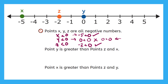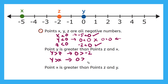Let's try the next statement. It says point y is greater than point z and x. Is this true? This would mean that y is greater than z and y is greater than x. If y is 0, this inequality would say 0 is greater than z, which is negative 2, and 0 is greater than x, which is negative 5. Are these inequalities true? Yes — 0 is greater than any negative number. So that means this statement is true.